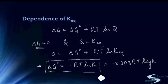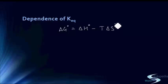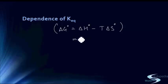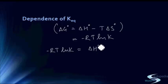Later we will study another equation in thermodynamics: delta G naught is also equal to delta H naught minus T times delta S naught. For a reversible chemical reaction, delta G naught also equals −RT ln K. By equating these two expressions, we can get the exact dependence of K equilibrium on temperature.